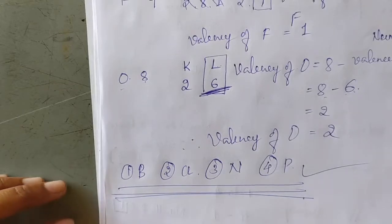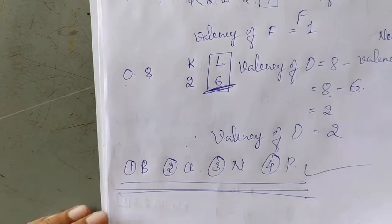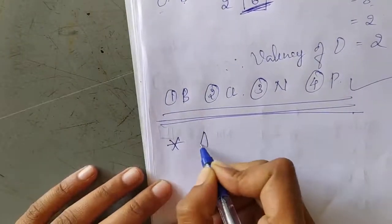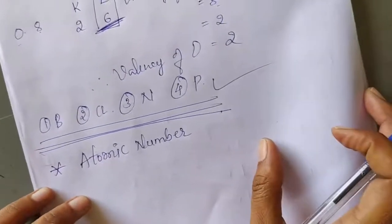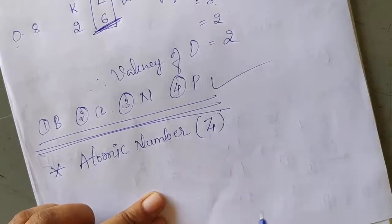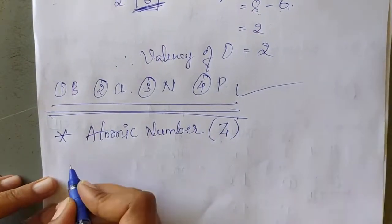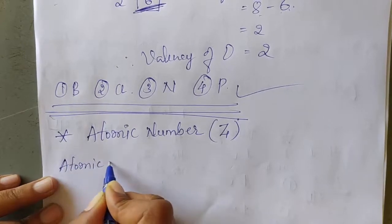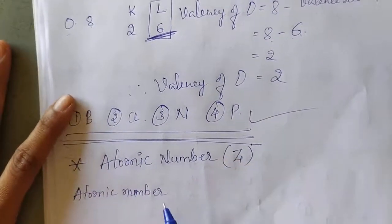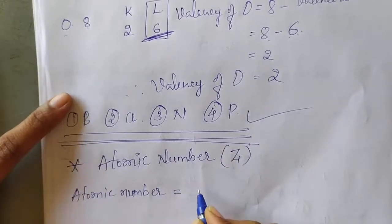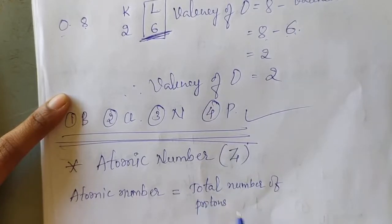Now we will see atomic number and atomic mass or mass number. First, we will see atomic number. Atomic number is represented by the letter capital Z. Atomic number is the total number of protons present in the nucleus.